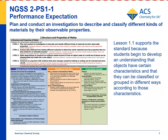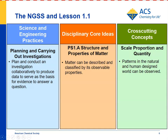For the NGSS Standard 2-PS1-1 — plan and conduct an investigation to describe and classify different kinds of materials by their observable properties — that's exactly what students are doing throughout this investigation. They're looking at objects, observing their characteristics, and grouping them according to the characteristic they choose. For disciplinary core ideas, matter can be described and classified by its observable properties. And for cross-cutting concepts, scale, proportion, and quantity, the pattern is that observable properties of objects can be used to classify them into groups.